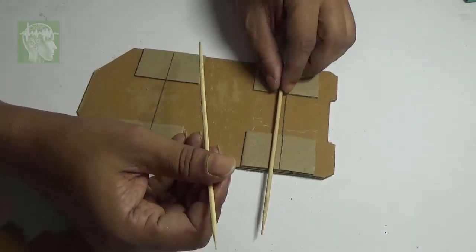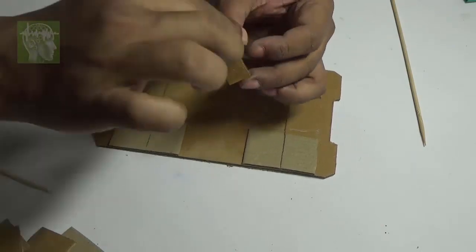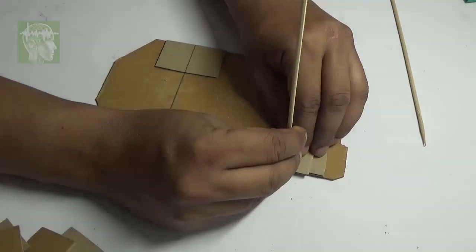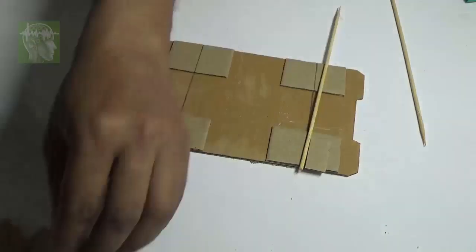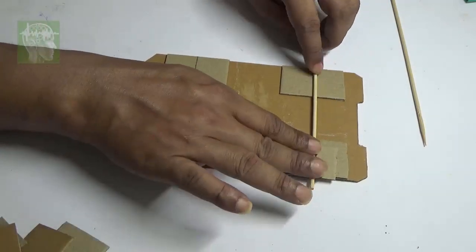Use two barbecue sticks as wheel shafts. Stick a few small pieces of cardboard on both sides to make a channel for the shaft.